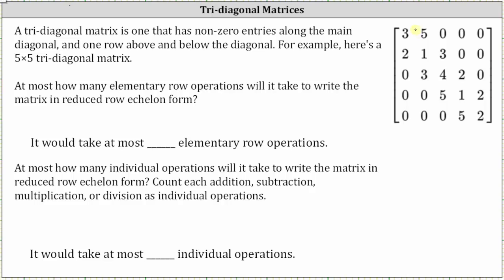Notice how there are nonzero entries along the main diagonal. Because this is a five-by-five matrix, there are five entries along the main diagonal. And there are also entries one row above the main diagonal as well as one row below the main diagonal. Notice there are four entries above and four entries below the main diagonal.